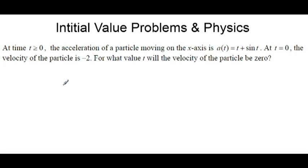At t = 0, the velocity of the particle is -2. For what value t will the velocity of the particle be zero?